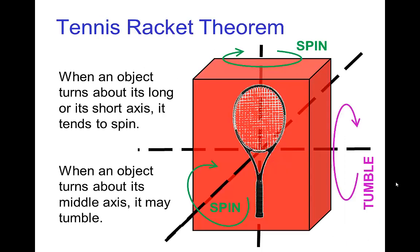Now it turns out there's a theorem called the tennis racket theorem, which explains why objects spin or tumble. And basically the tennis racket theorem says that for objects, they have a long axis, a short axis, those two are perpendicular to each other.